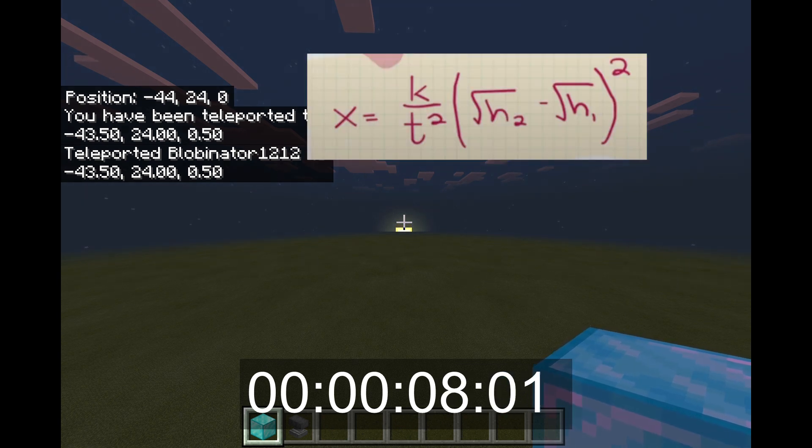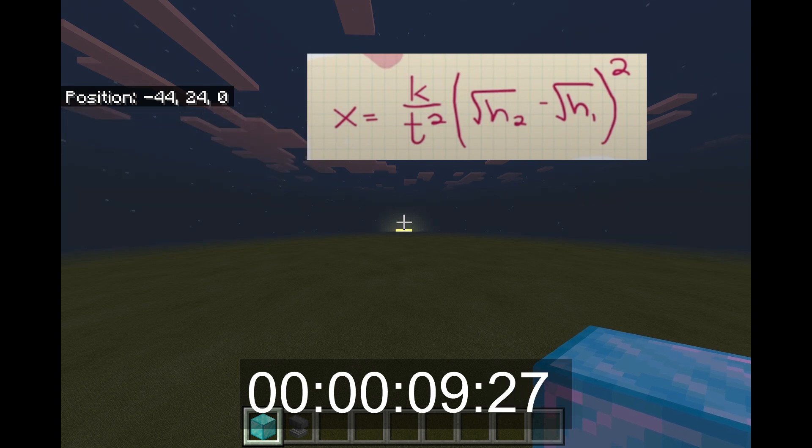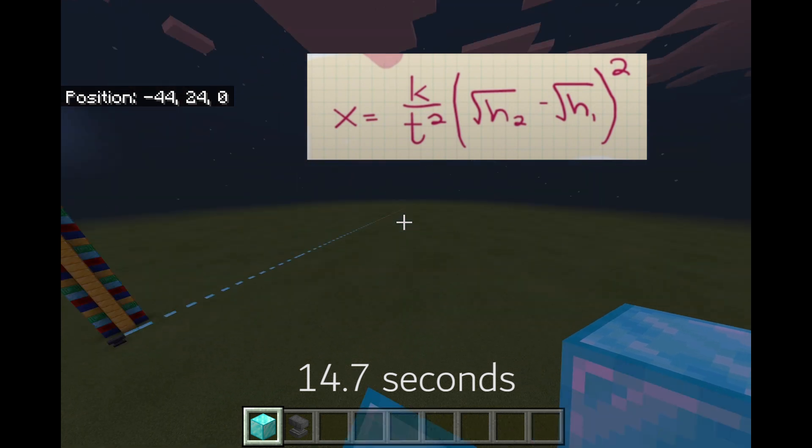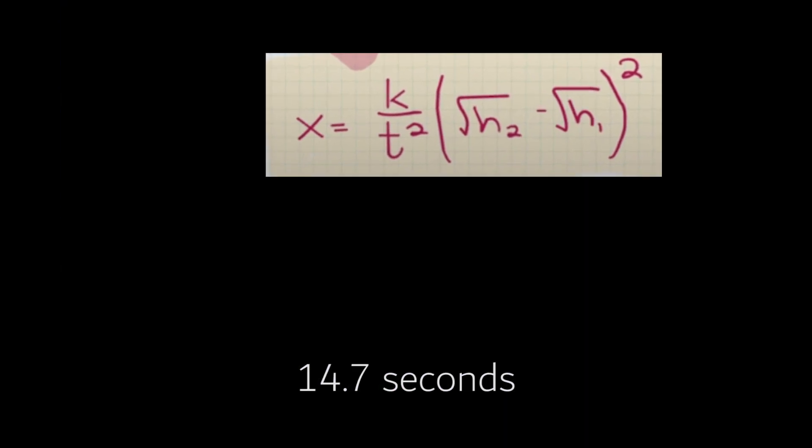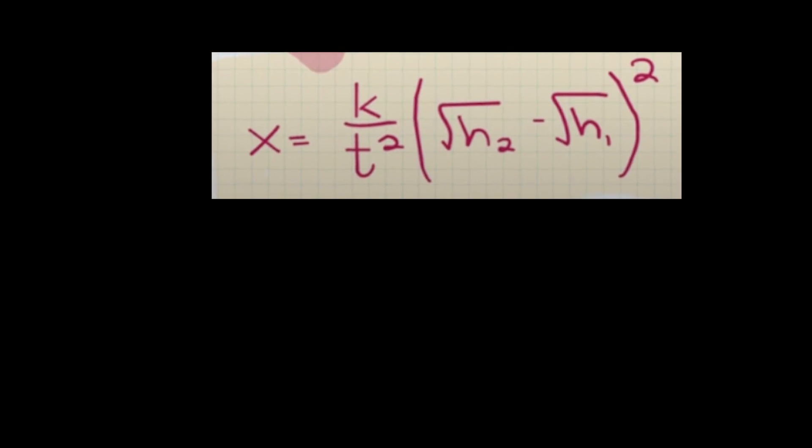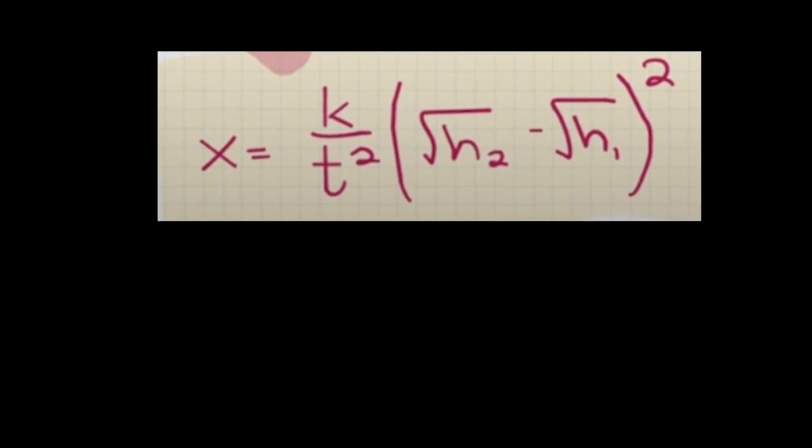We're going to be using the following equation to calculate for the radius. Here, x is equal to the radius, and k is equal to 2 times the length of a Minecraft day in seconds divided by 2 pi squared. I highly recommend for you to see how this equation is derived using the link in the description.